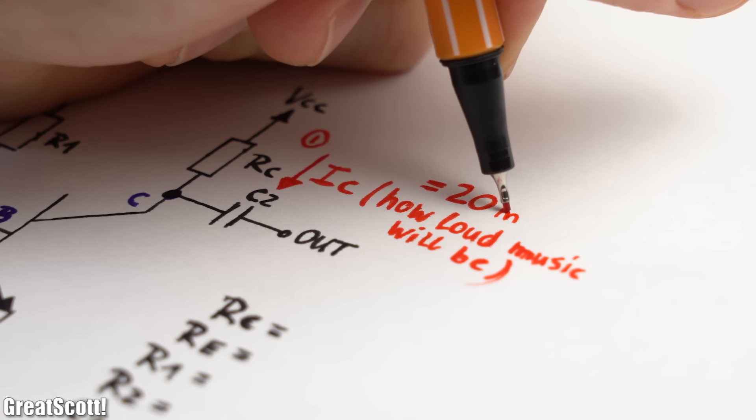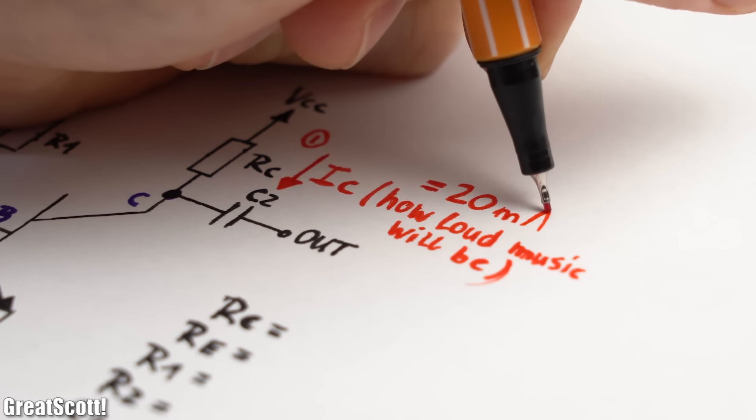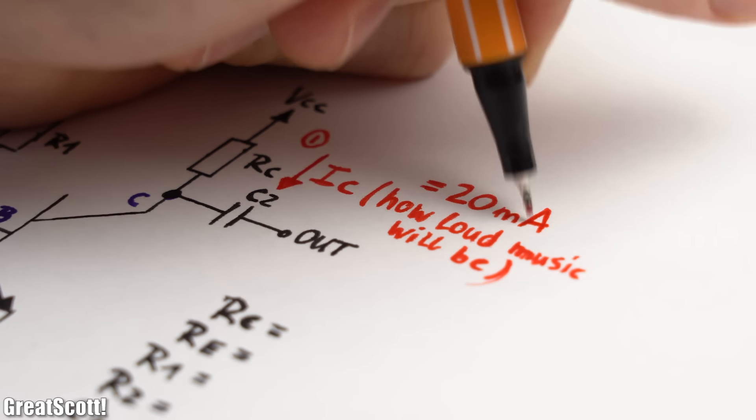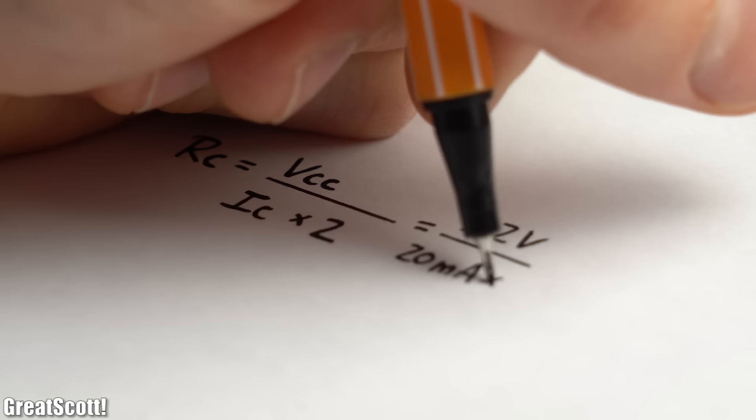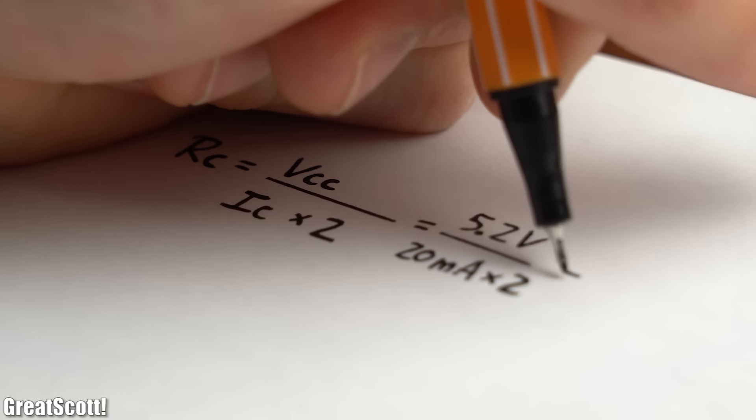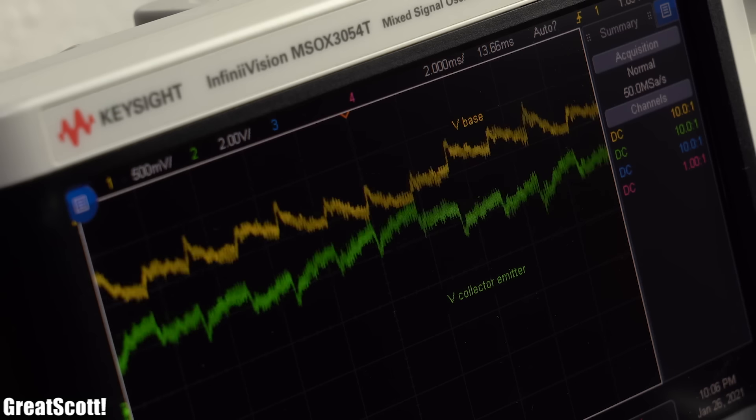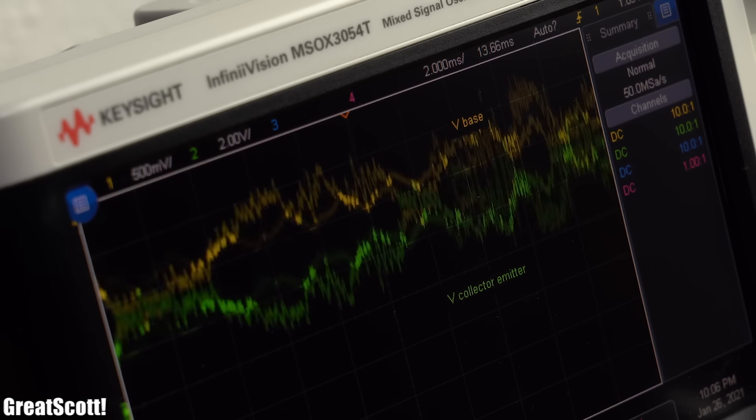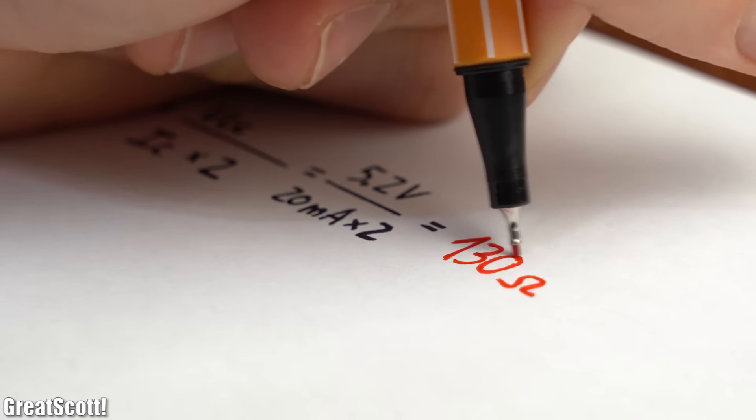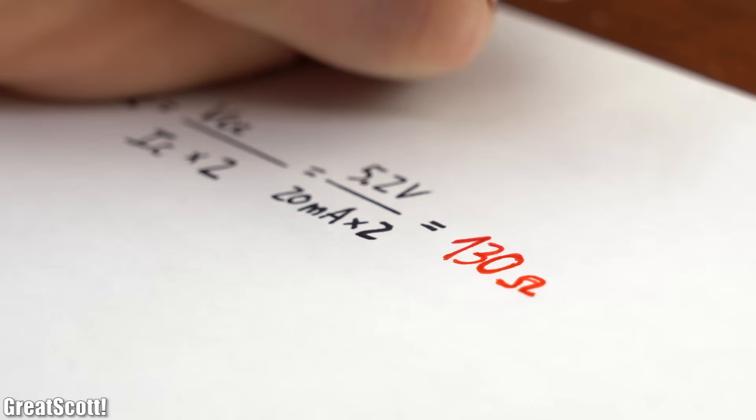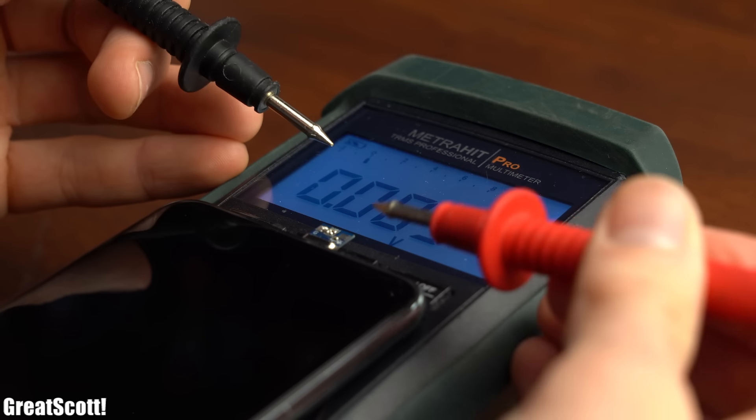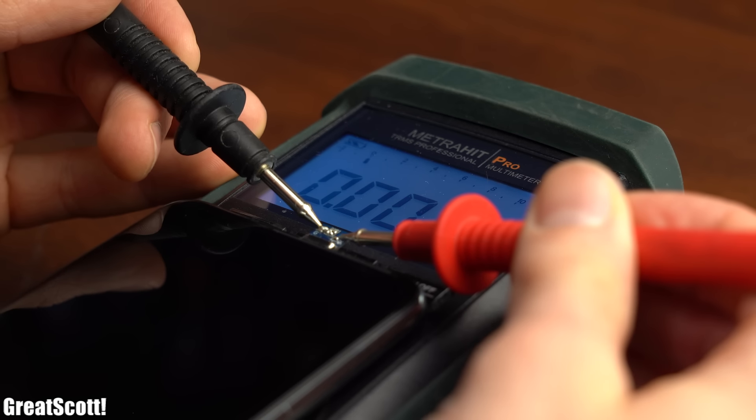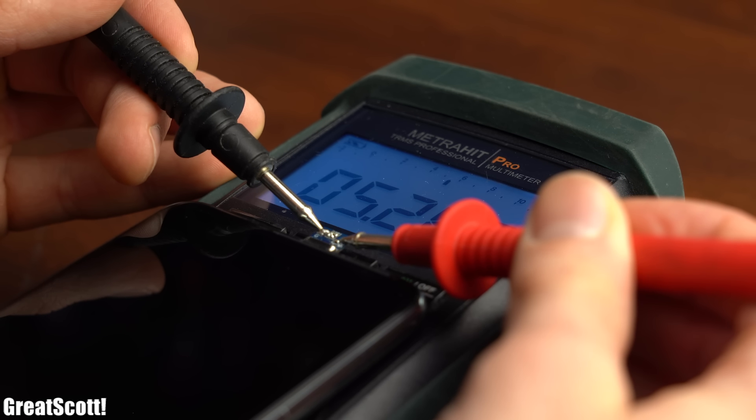And now that we got the collector current of 20mA, we can calculate RC, which is the supply voltage divided by the collector current and by 2, so that the output music signal swings around half of the supply voltage. This equals a value of around 130 Ohms. The supply voltage, by the way, will be provided through my phone and is around 5.2V.